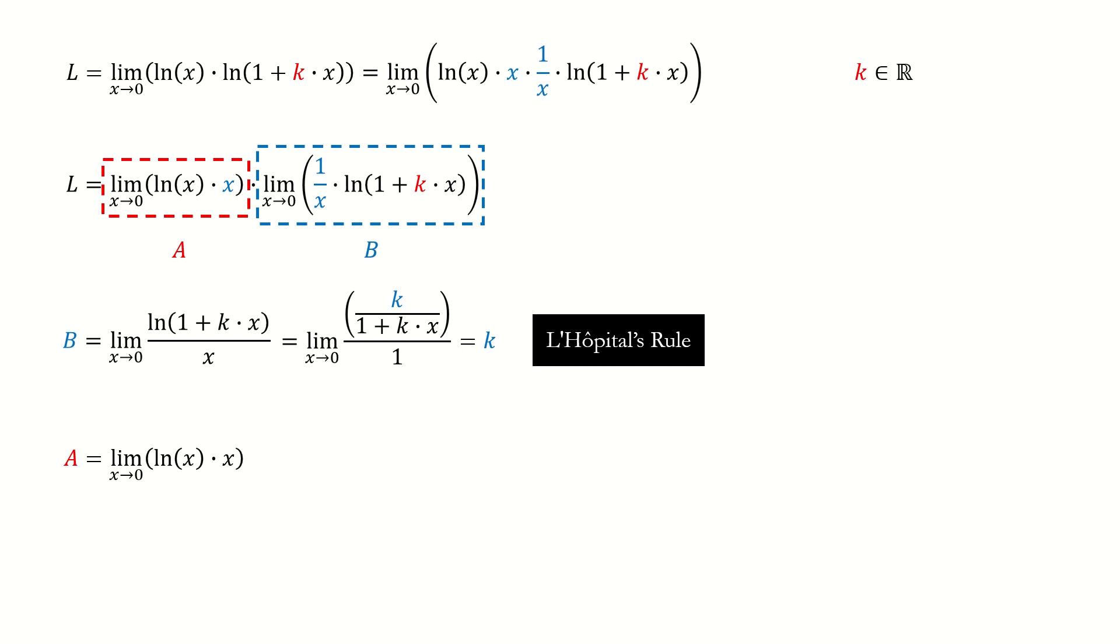Now let's solve for a. Here we define x equals 1 over t. Plug in the substitution, and we got here. Log 1 over t equals minus log t.